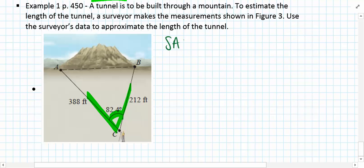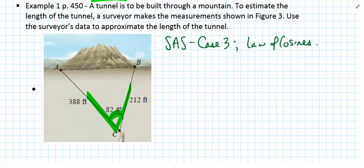So this looks like SAS to me. SAS is case number 3, and case number 3 relies on our law of cosines.